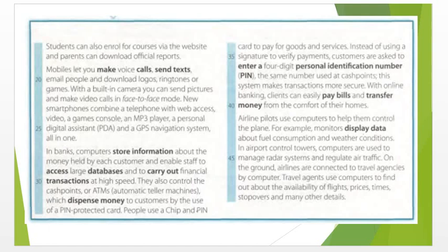With online banking, clients can easily pay bills and transfer money from the comfort of their homes. In airlines, pilots use computers to help them control the plane — for example, monitor displays showing data about fuel consumption and weather conditions. In airport control towers, computers are used to manage radar systems and regulate air traffic. On the ground, airlines are connected to travel agencies by computer. Travel agents use computers to find out about the availability of flights, prices, times, stopovers, and many other details.